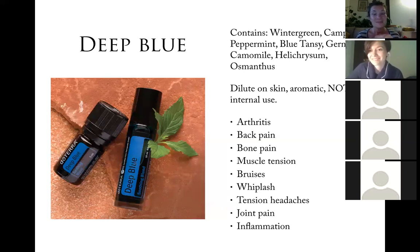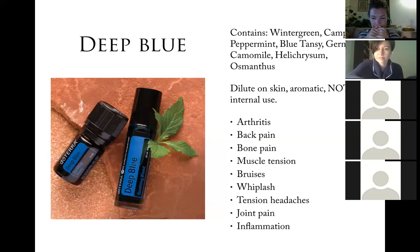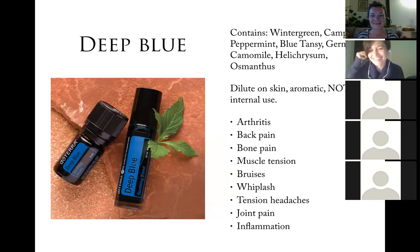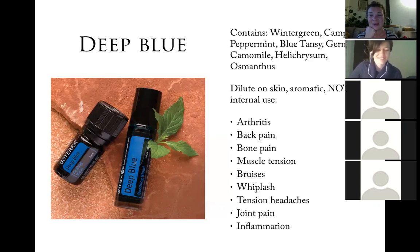Petitgrain was suggested for generational healing issues, as it addresses generational patterns — described as the men's equivalent of lavender, friendlier for men. White Fir was also mentioned for generational healing, helping to break patterns and release burdens passed down through family lines. One participant's mother uses White Fir and finds it really helpful, though it's not the nicest smell. These emotional-level tools, combined with the physical oils, provide a more complete approach to healing.